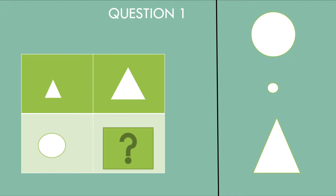Let's look at the answer. What options do we need? First, it's a small triangle. Next, a big triangle. What is the relationship between these two? It's the bigger one. Here is a circle. What is the answer? The same circle, but the size is bigger. So the bigger circle is the answer.